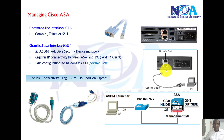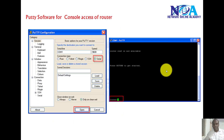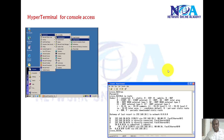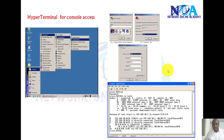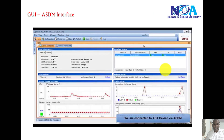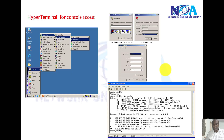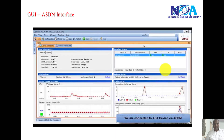For the console connection, you can use applications like SecureCRT or HyperTerminal, though most modern Windows platforms no longer support HyperTerminal. The ASDM GUI looks something like what's shown here, and I'll be covering the ASDM interface and its configurations in more detail later on.